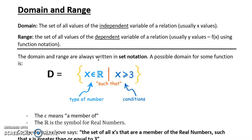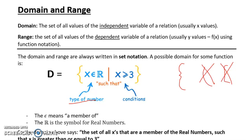And here we come to something called set notation. We write the domain and range in set notation always. A possible domain for some function uses these brackets — not round brackets, but brackets with a little arrow in the middle. It's very important that we draw it just like that. This has X, then a little epsilon sign, then the folded R, then a line, then again X with a greater than or equal to sign, and 3. So we start by listing the type of number. This says that X is a real number, and then the little line means 'such that,' and then we have the condition: X is greater than or equal to 3. The epsilon sign means 'a member of,' and R is the symbol for real numbers.